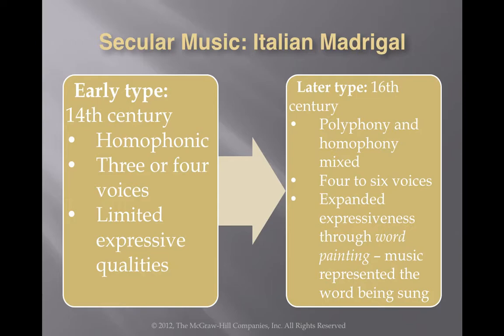The Italian Madrigal developed from the 14th century to the 16th century. At first it was more of a homophonic genre, but it developed into a polyphonic and homophonic genre involving four to six voices and using a technique known as word painting, where the music represents the words that are being sung.